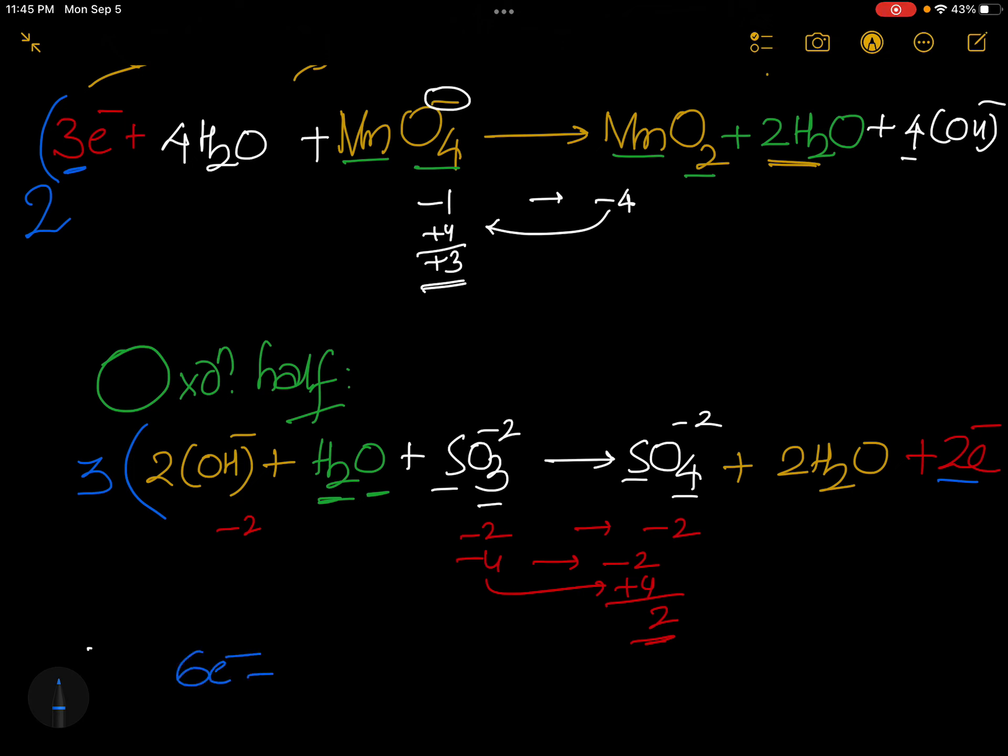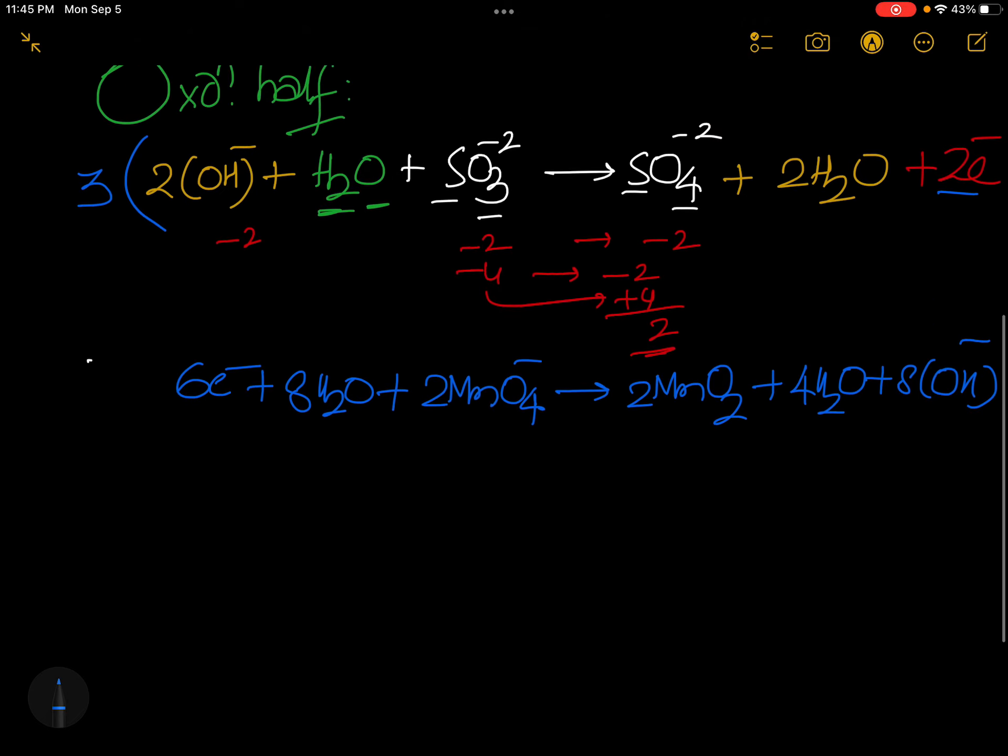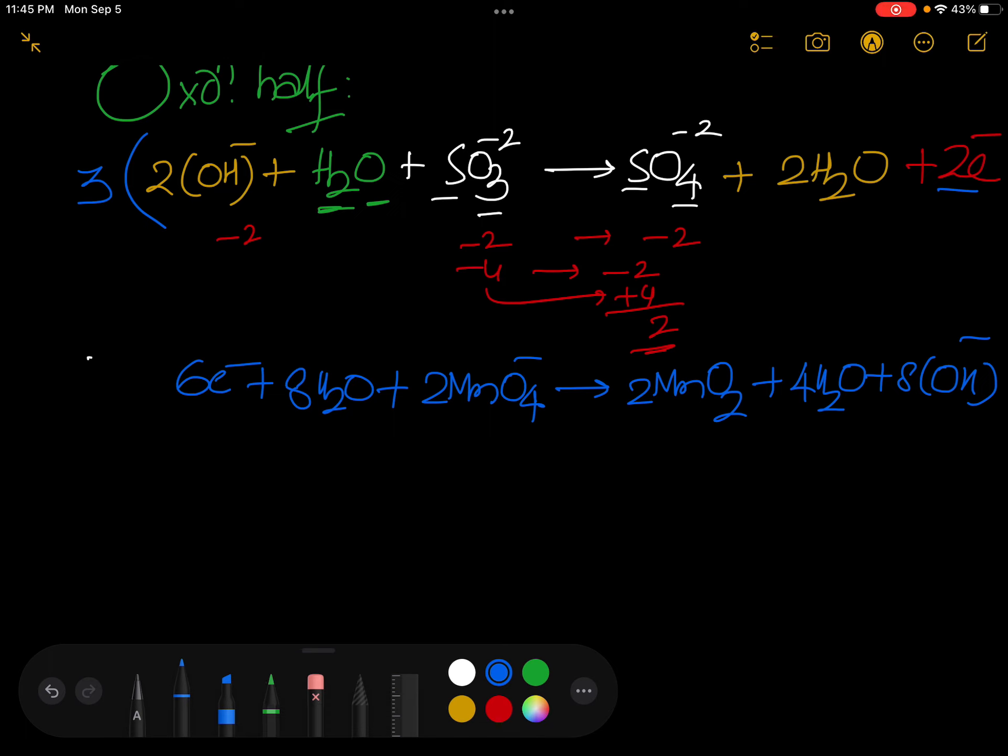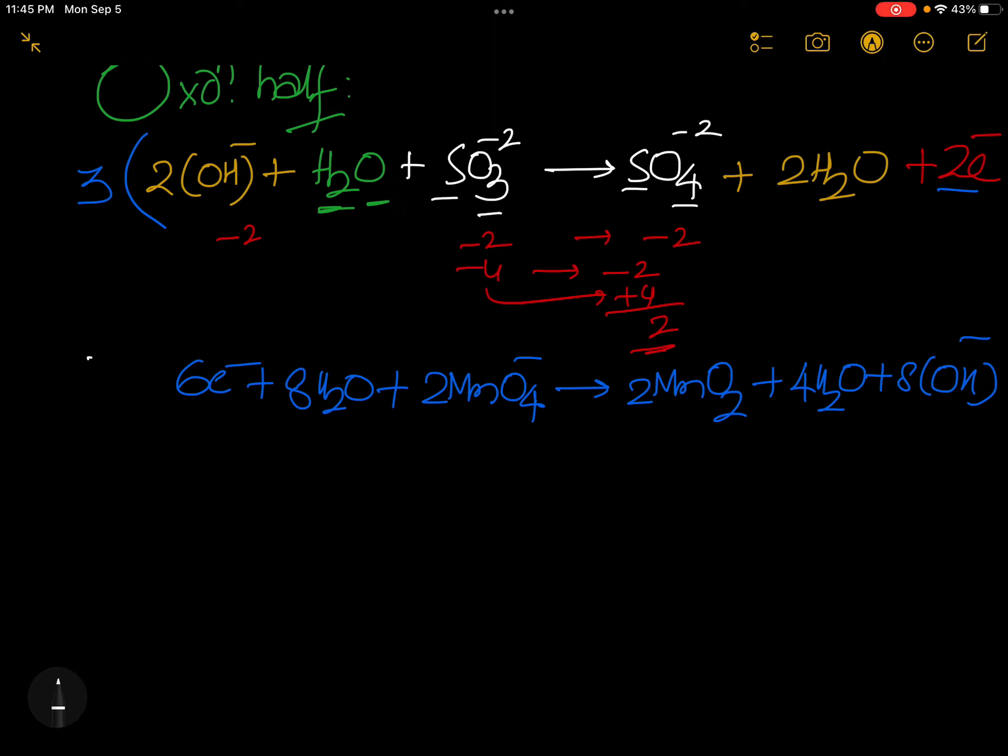6 electrons plus 8 H2O plus 2 MnO4 minus gives 2 MnO2, 4 H2O plus 8 OH minus. When this expression is multiplied, 6 OH minus plus 3 H2O plus 3 SO3 minus 2.